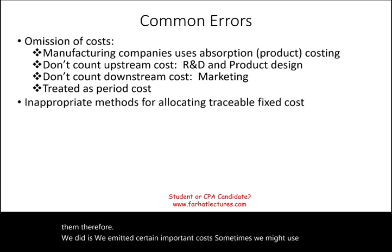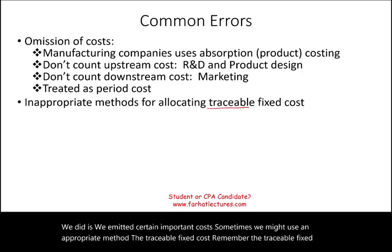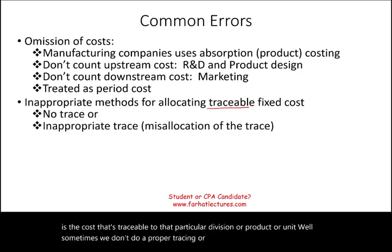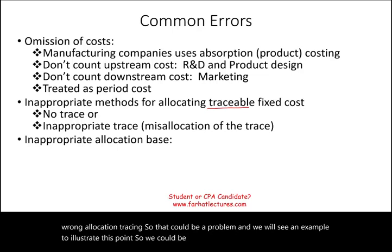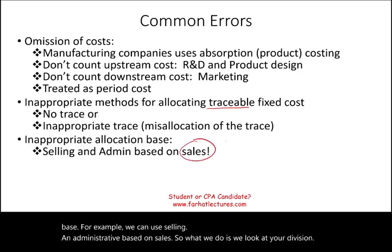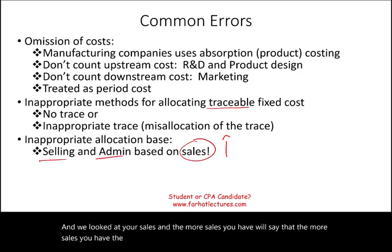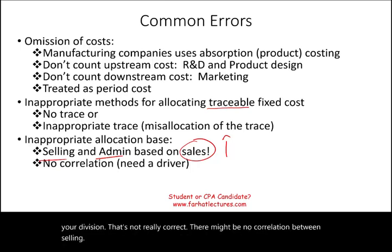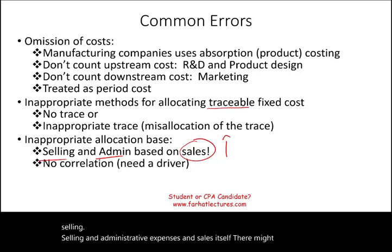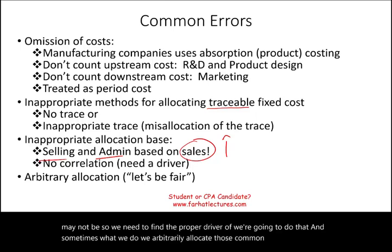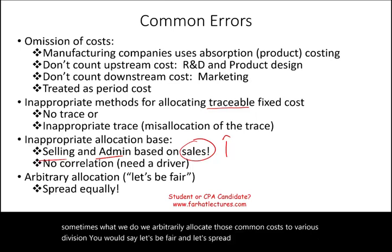Another common error is using an inappropriate method for allocating traceable fixed costs. Sometimes we don't do proper tracing, or we use the wrong allocation base. For example, we might allocate selling and administrative costs based on sales — assuming that divisions with more sales get more selling and administrative allocated to them. But there may be no correlation between selling and administrative expenses and sales itself. We need to find the proper cost driver. Sometimes companies arbitrarily allocate common costs equally across divisions, which can also be problematic.